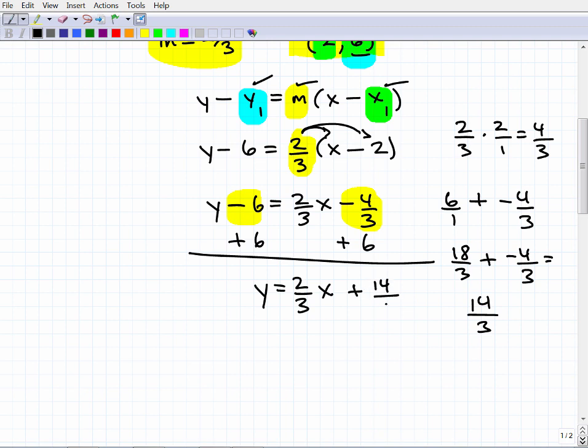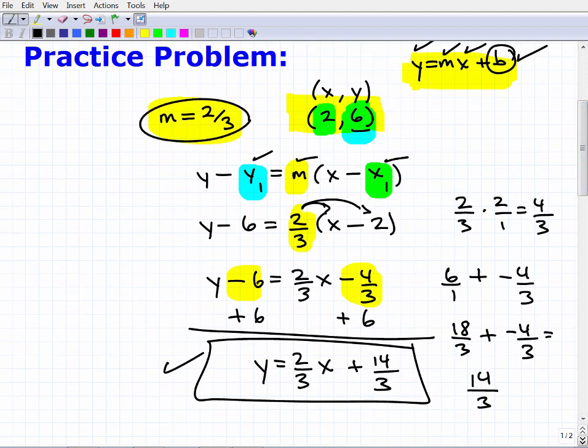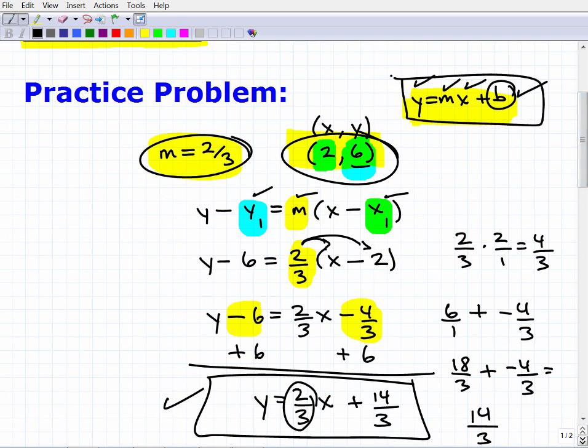No need to turn it into a mixed number. We are good to go. So as long as I didn't make any mistakes, which I don't believe I did, this is our answer: Y = (2/3)X + 14/3. This is the equation of a line that has a slope of two thirds, and we could see that here because that's the coefficient of the X, and passes through the point (2, 6). This is a basic algebra skill.